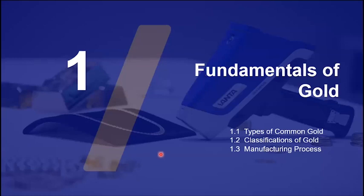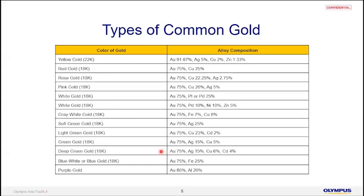Let me start with the fundamentals of gold. These are the types of common golds you can see — we have the classic 22-carat 916 gold, and we also have rose gold. The different colors of gold have a lot to do with the chemistry. Red gold, for instance, is only gold and copper — the copper gives it the red color. Rose gold is also high in copper but with some silver as well, giving it a more bronze color rather than red. Then we have pink gold, et cetera.